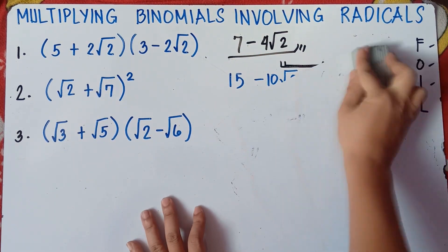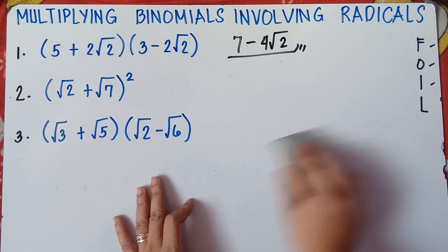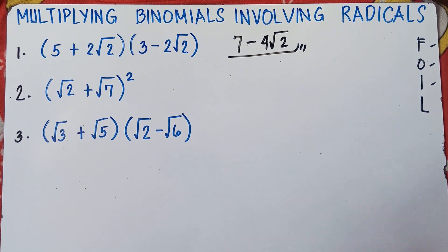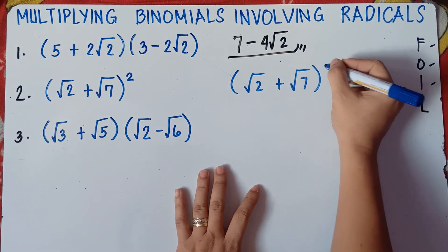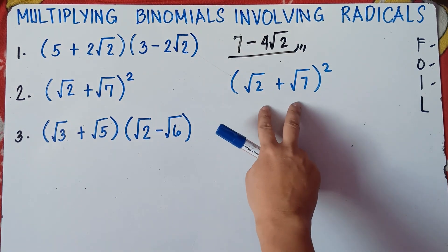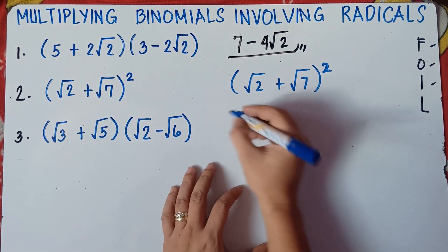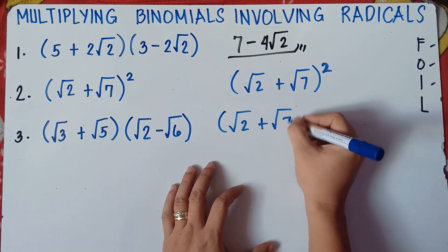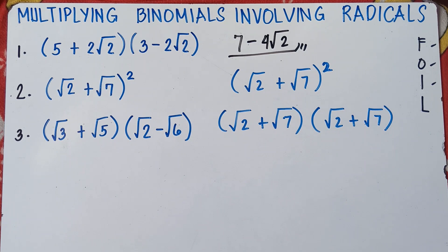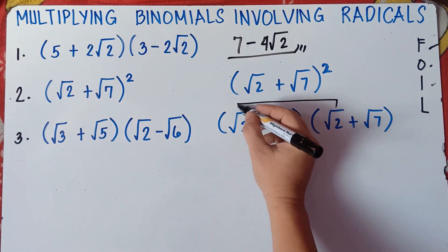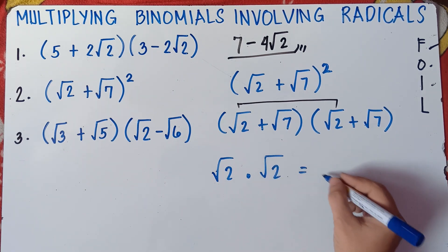Let's try number 2. We have the quantity square root of 2 plus square root of 7, squared. This means you multiply this expression by itself twice: square root of 2 plus square root of 7, times square root of 2 plus square root of 7. We'll use the FOIL method. First: square root of 2 times square root of 2 is square root of 4, and the square root of 4 is 2.